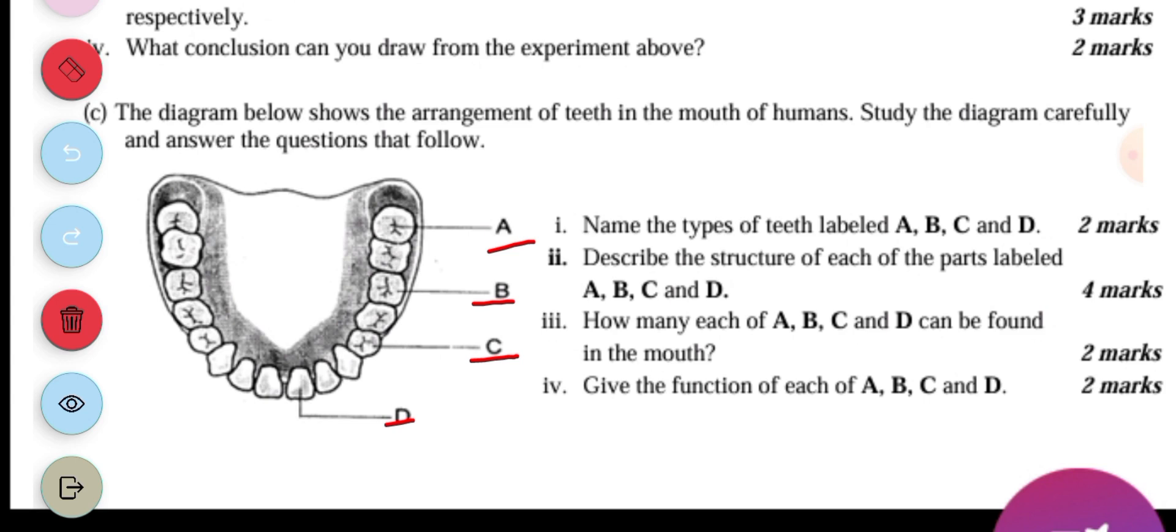Then the IV is give us the function of A, B, C and D. So starting with A, A is used for grinding of food and grinding and chewing food. And then B is also grinding and chewing food. Then C is used for tearing flesh and then D is for biting or grabbing the food.